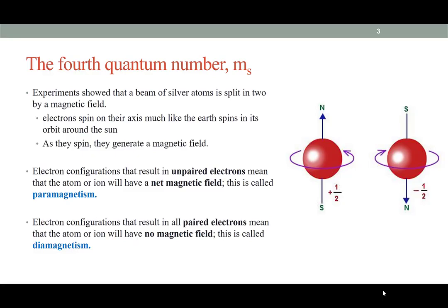According to Hund's rule, when there are degenerate orbitals, we place one electron in each of those equivalent orbitals before we start pairing them up. We also know that when we do pair up electrons within the same orbital, they must have opposite spin.